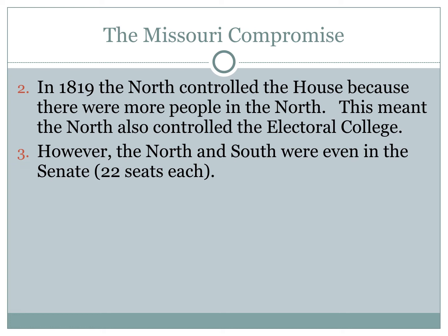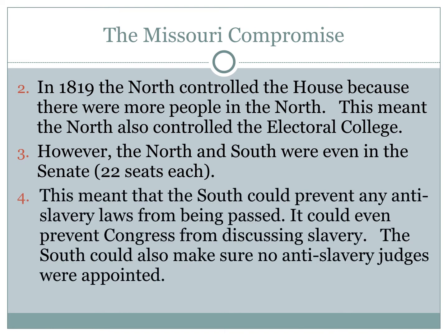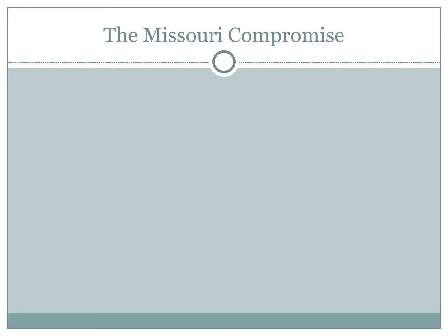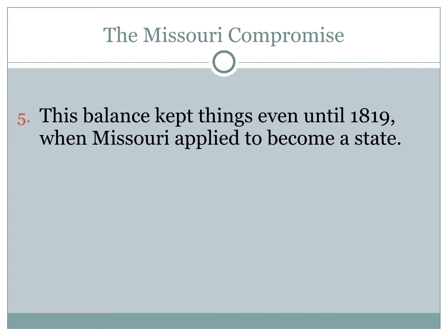Even though most of the political power was held in the North, having that equal split in the Senate was really significant, because it meant the South could prevent any anti-slavery laws from being passed. It could even prevent Congress from discussing slavery. And because the Senate has the power to approve judicial nominations, the South could also make sure no anti-slavery judges were appointed. This balance of power kept things even until 1819, when Missouri applied to become a state.